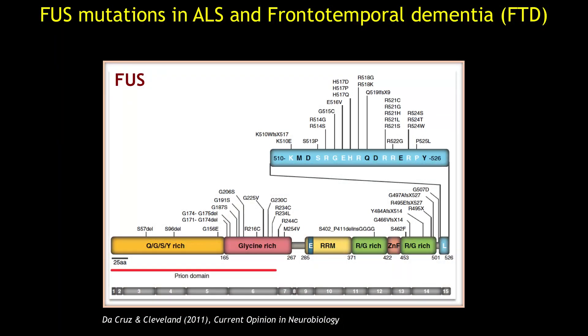In this study, our aim was to understand how mutation in one of these ALS-causative genes, named FUS, causes toxicity. FUS is an RNA-binding protein primarily found in the nucleus with multiple proposed functions. However, in ALS patients, mutant FUS can be mislocalized and aggregated in the cytoplasm of neurons and glia.